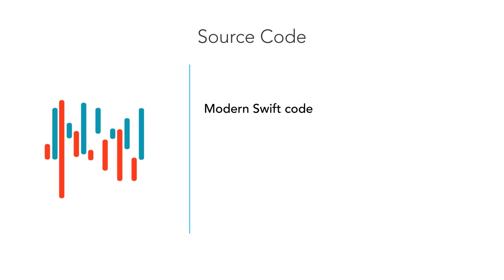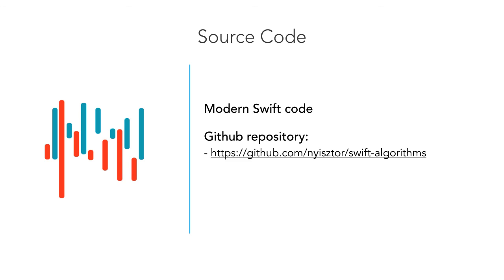We are going to use modern Swift to implement the source code in this course. Swift 3.0 has brought fundamental changes and language refinements, and all the samples were written with the new standard in mind. The projects are available on GitHub, and you can download them from the repository linked below. Visit swift.org for everything Swift related, and also visit my website lelka.com where you can find many Swift related articles and video tutorials. In the next section we are going to talk about the big O notation and will analyze the efficiency of algorithms.